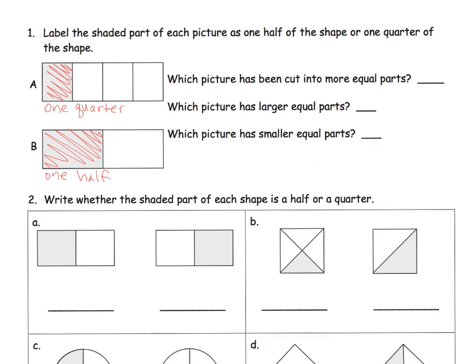So which picture has been cut into more equal parts? Well, which one, A or B? Well, A has been cut into more equal parts, but the question is, which picture has larger equal parts? And it's B. And so we're going to label that B. And then which picture has smaller equal parts? And, of course, it's A.